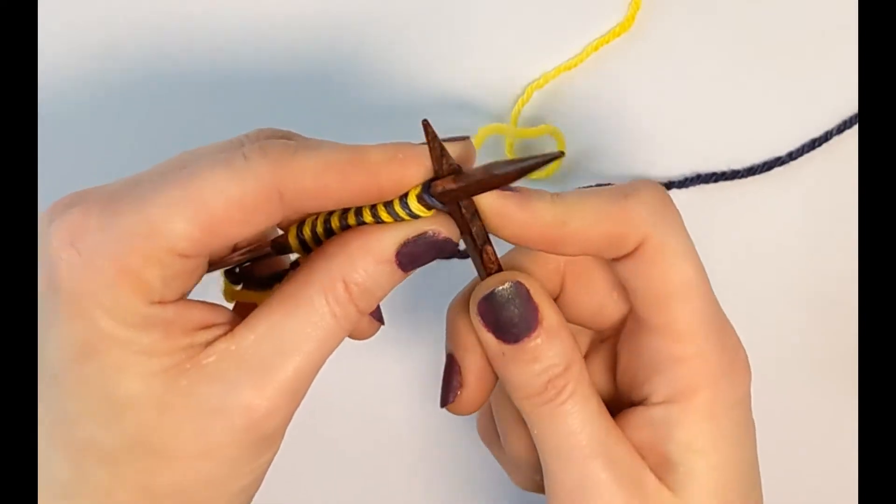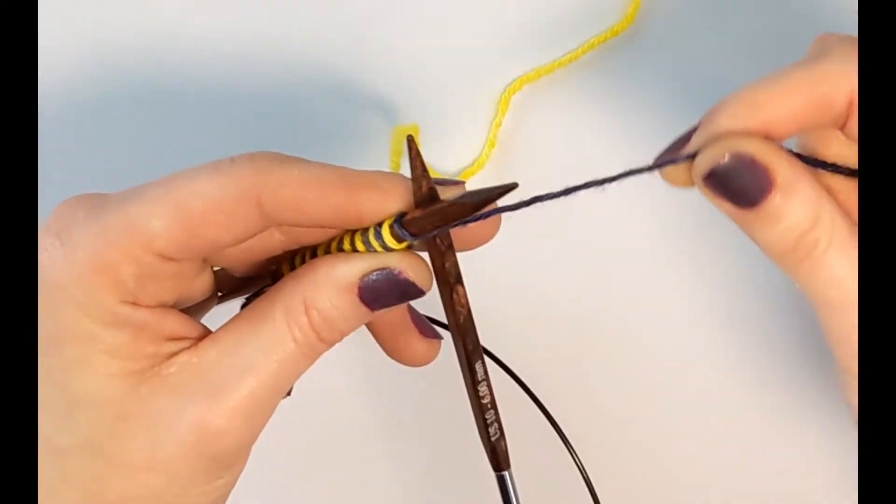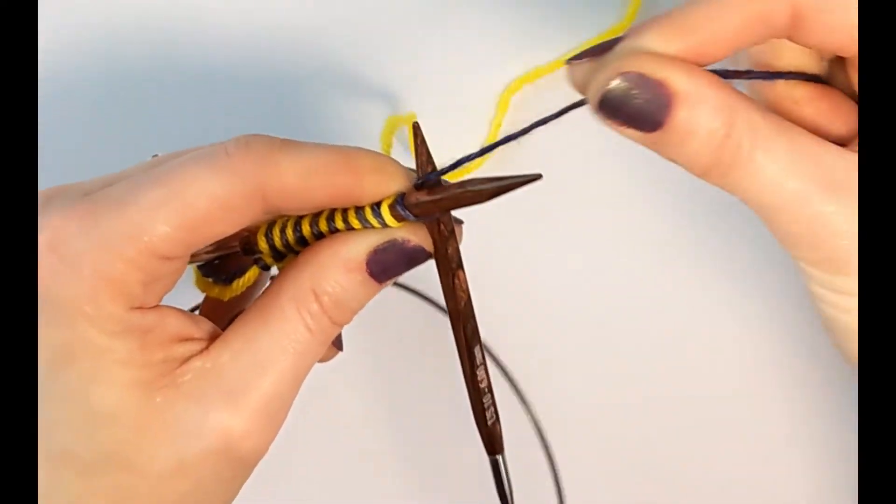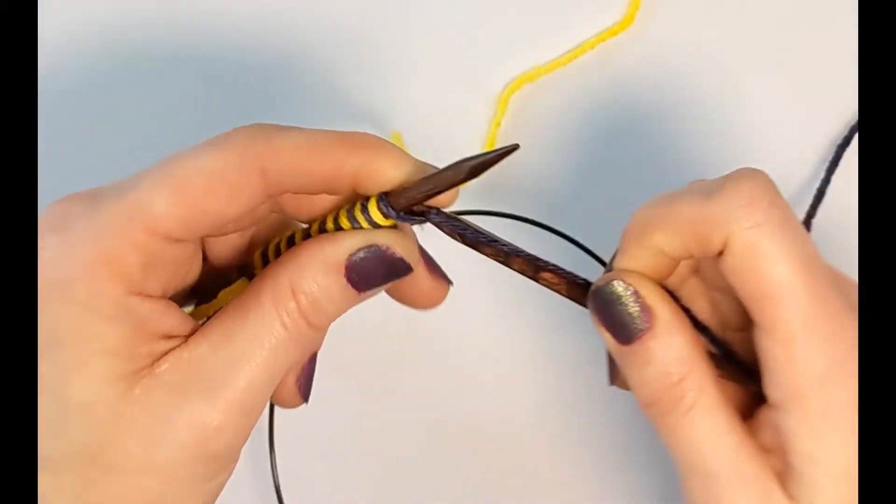Here, I'm going to knit into the first stitch using the same color. My first stitch was navy, so I'm knitting into it with navy.